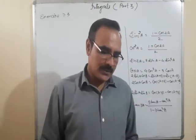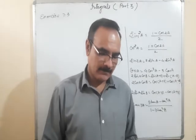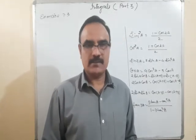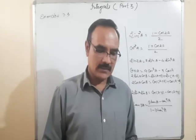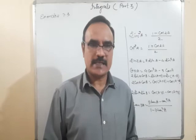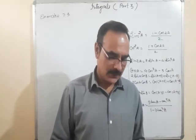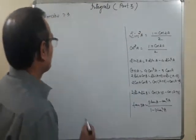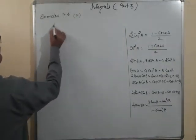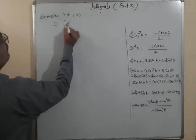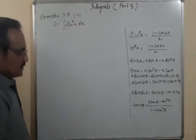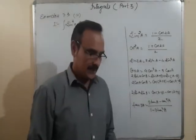Question 9: cos x/(1 + cosx) — multiply by (1 − cosx)/(1 − cosx) to rationalize the denominator; it becomes −sin²x in the denominator. Question 10: integrate sin⁴x dx.